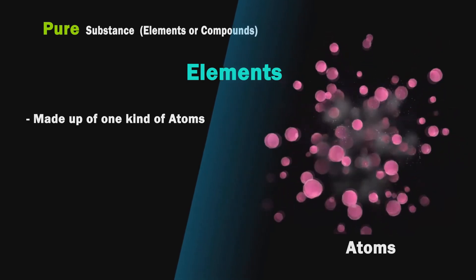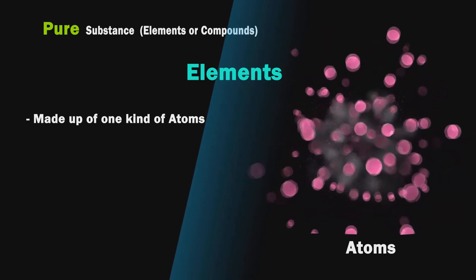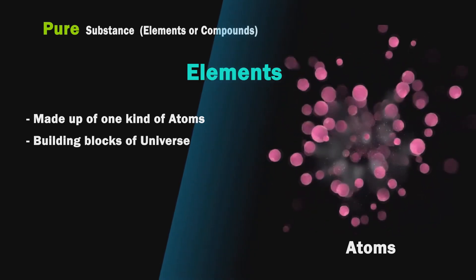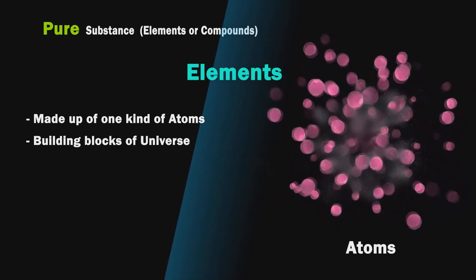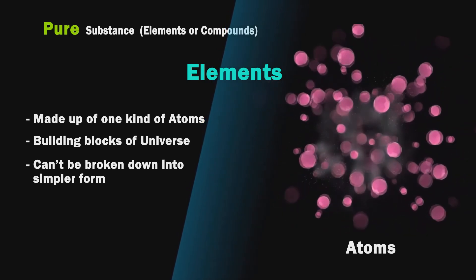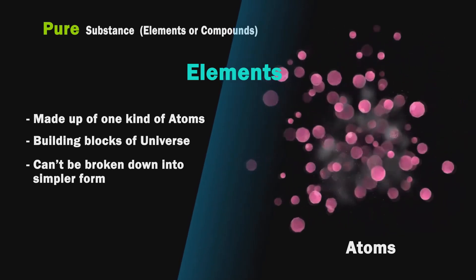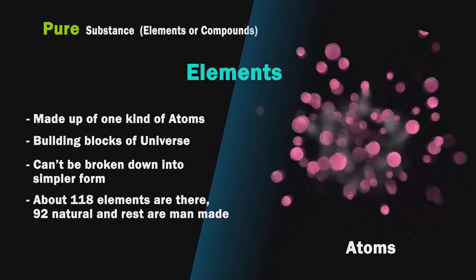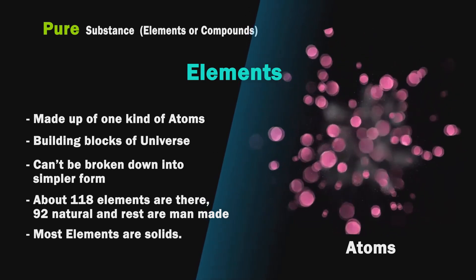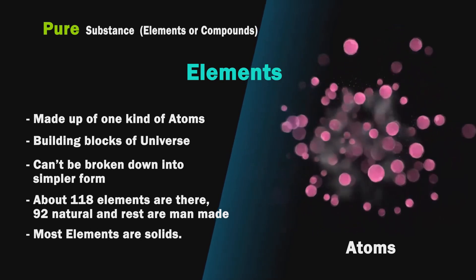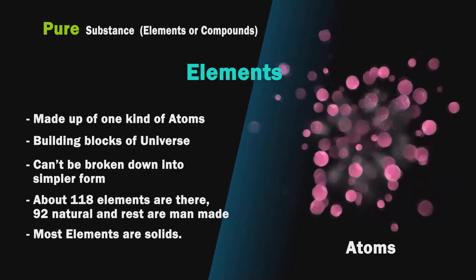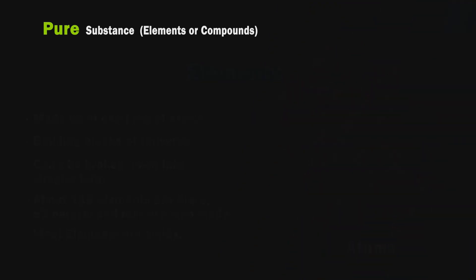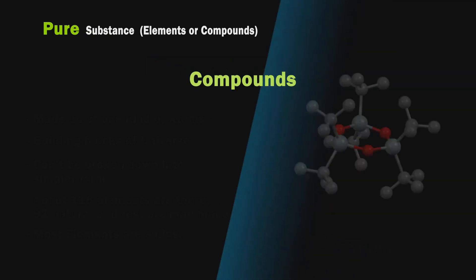Properties of an element: First, made up of one kind of atom. Second, they are the building blocks of the universe. Third, they cannot be broken down into a simpler form. Fourth, there are about 118 elements, 92 natural and the rest are man-made. Fifth, most elements are solids.